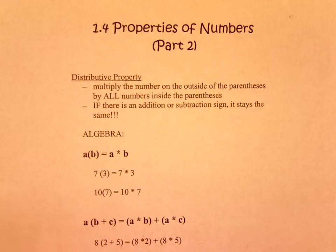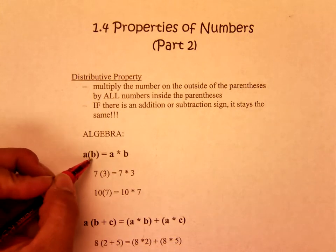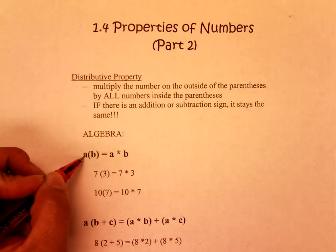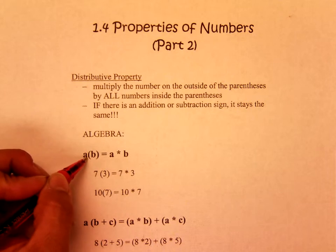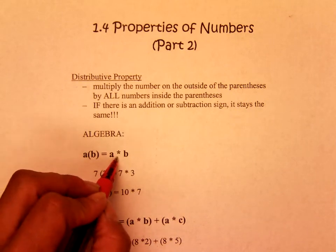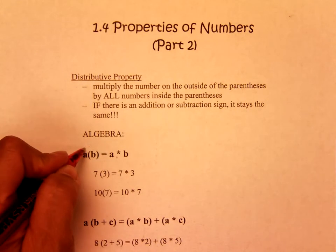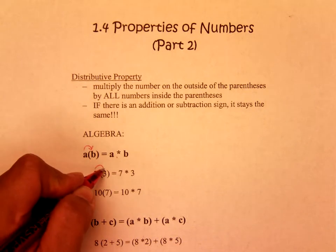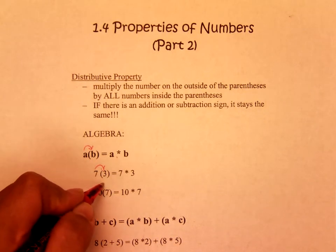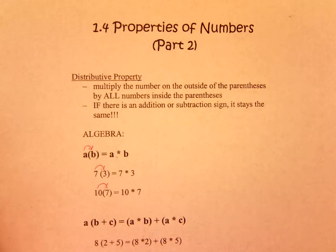So in algebra, you would see it as A parentheses B. Any time you see a number or a letter next to a parentheses, it always means multiplication. So it would be A times B, and 7 times 3, and 10 times 7. It always means multiplication.